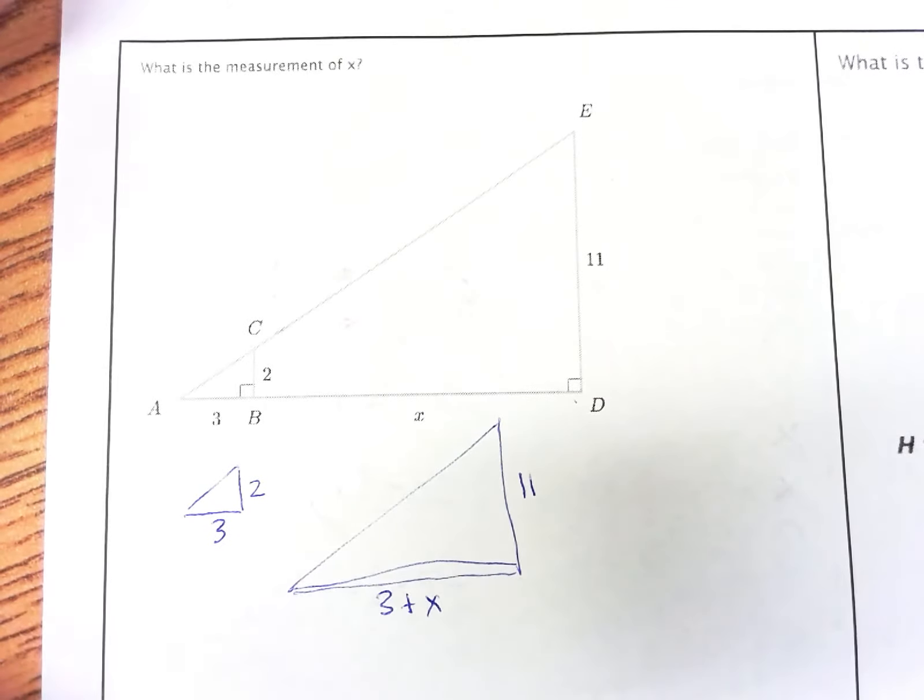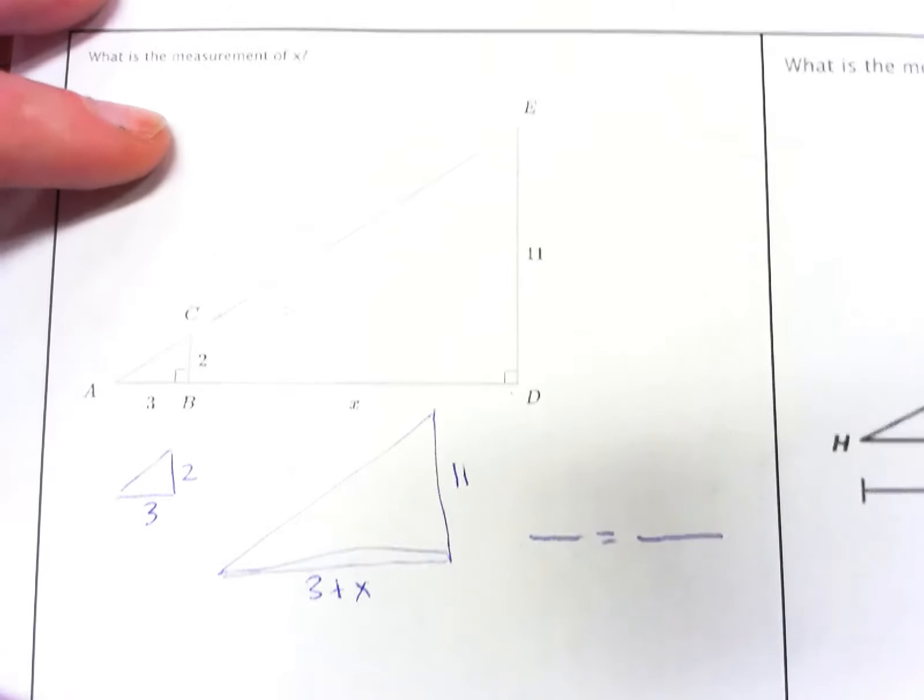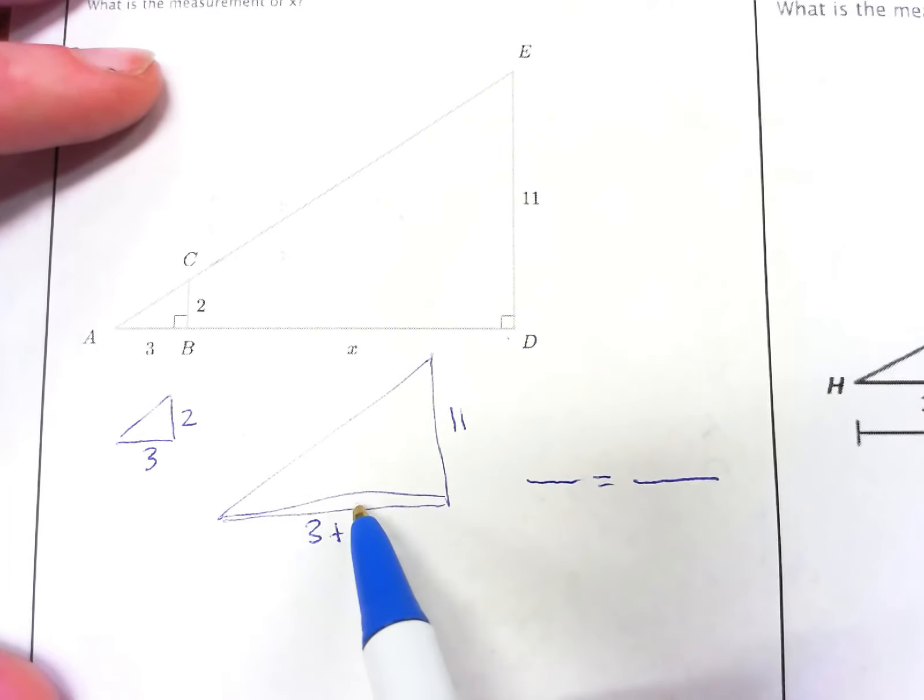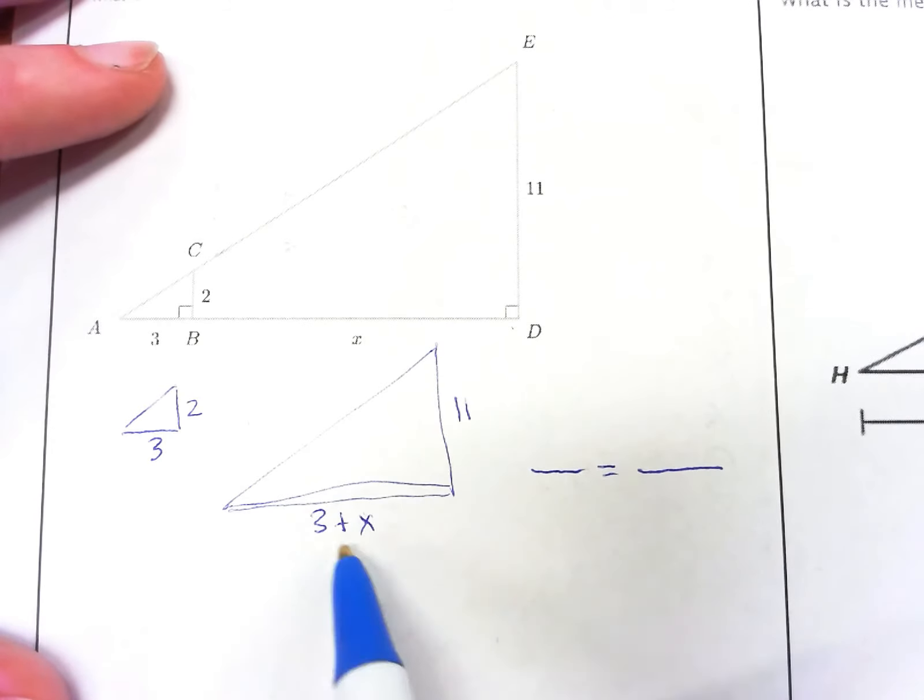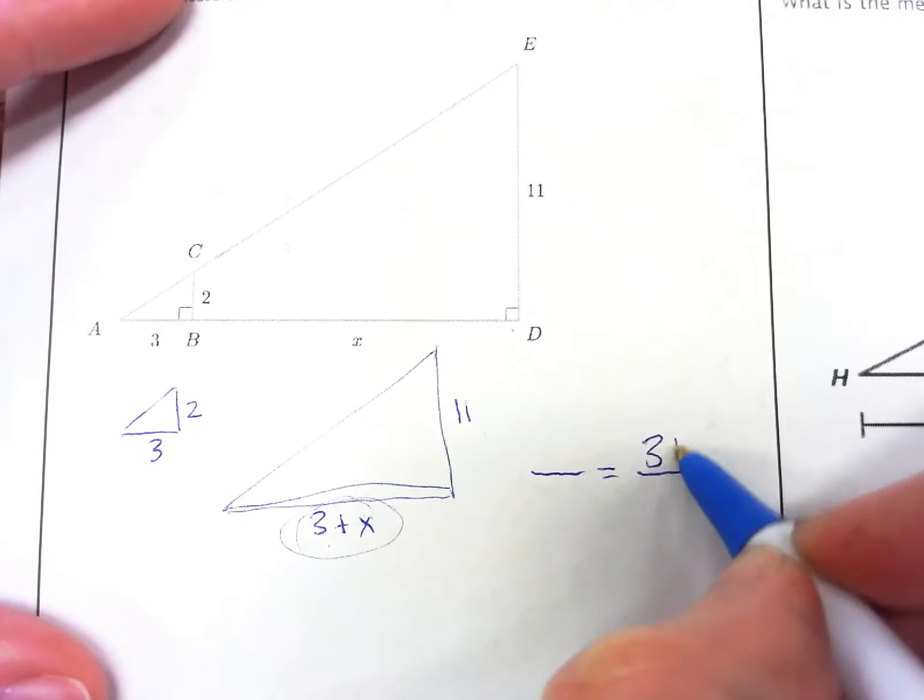So now we can just use our formula that we've talked about in class, or the ratio that we've talked about in class, to figure out what the value of x is. So I have 3, I have 2, and then I have 3 plus x and 11. I'm going to use this as my unknown value, and I'm going to say 3 plus x here.